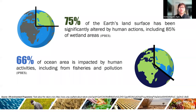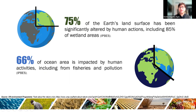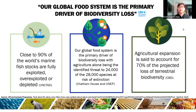This area is impacted by human activities including fisheries and pollution. Our global food system is the primary driver of biodiversity loss, and close to 90 percent of the world's marine fish stocks are fully exploited, overexploited, or depleted. With agriculture alone identified as a threat to 24,000 of the 28,000 species at risk of extinction, agricultural expansion accounts for about 70 percent of the projected loss of terrestrial biodiversity.